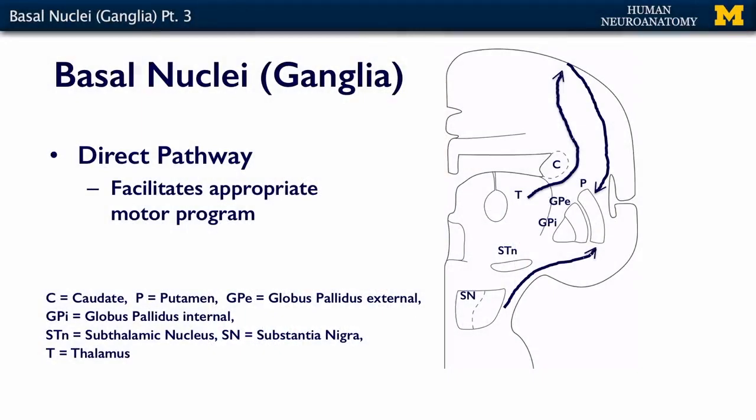There's a direct pathway and an indirect pathway. The direct pathway facilitates appropriate motor programs. Some of the differences between direct and indirect revolve around the globus pallidus, the subthalamic nucleus, and their connections back and forth to the nigra and the thalamus. What I want you to know for this course is that the direct pathway facilitates appropriate motor programs. If there's something wrong with your direct pathway, you may be unable to initiate a normal habitual motor behavior, like initiating walking.